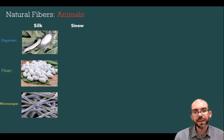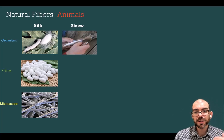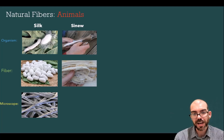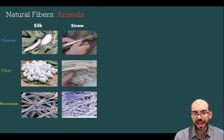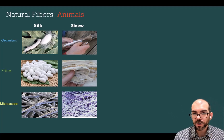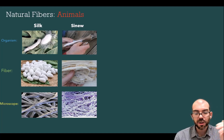Another example of an animal fiber is sinew. Sinew is made from the tendons of animals. Here you can see the fiber removed from the animal and stretched out, and here's what it looks like under a microscope. Immediately you can see differences between silk and sinew. The silk is really smooth, somewhat spacious and ordered, whereas the sinew goes all over the place and is very dense.